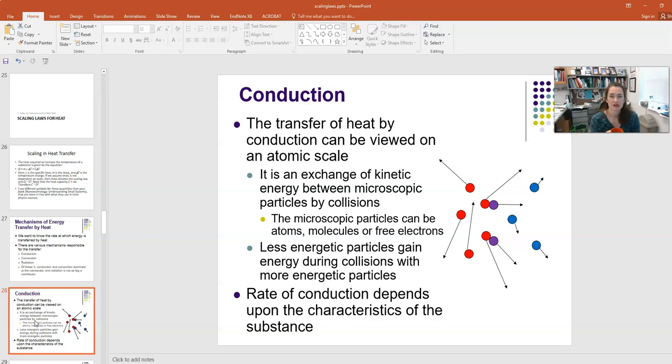Now, just to remind you a little bit, conduction and convection require physical contact between substances or a medium. Radiation is the only one that can occur in a vacuum. So conduction is the transfer of heat on an atomic scale caused by collisions between particles. It's an exchange of kinetic energy between microscopic particles by collisions, and those can be free electrons, for example, the free electrons in a metal, or it could be a direct collision between molecules that are touching one another. In those collisions, less energetic particles gain energy and get warmer, and more energetic particles lose it, and then the energy is spread or transferred throughout the material.